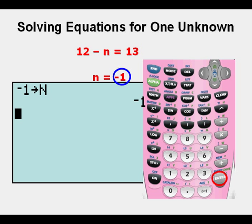So now we've stored negative 1 for n. We check the solution by entering the left side of the equation, and here we've entered 12 minus n. Press enter, and since 13 equals 13, we have proven that negative 1 is the correct value for n.